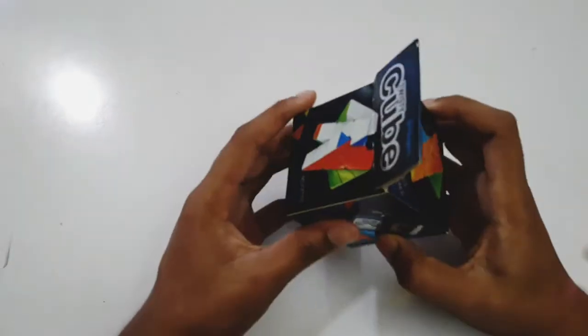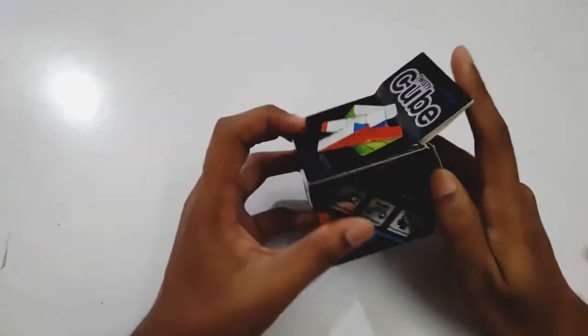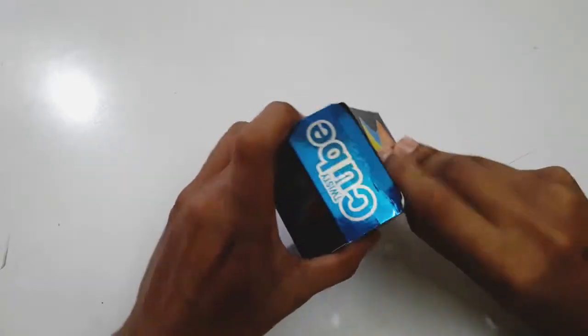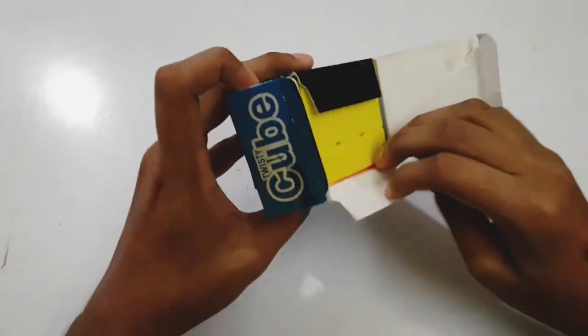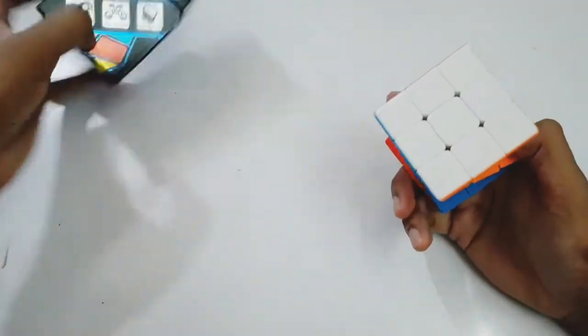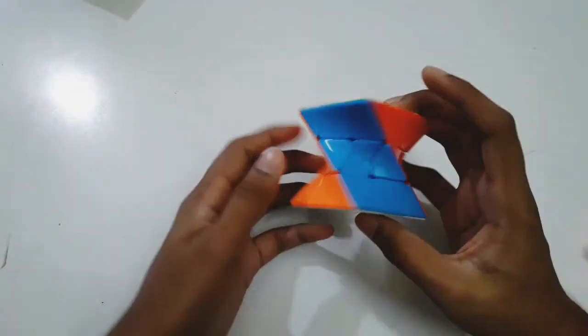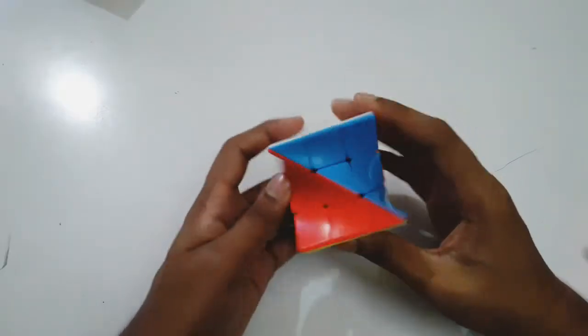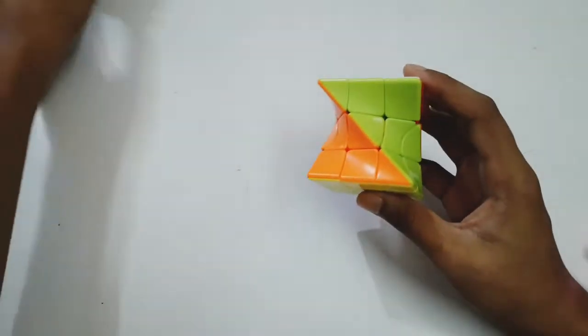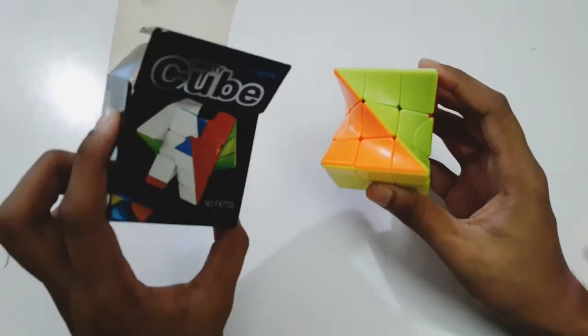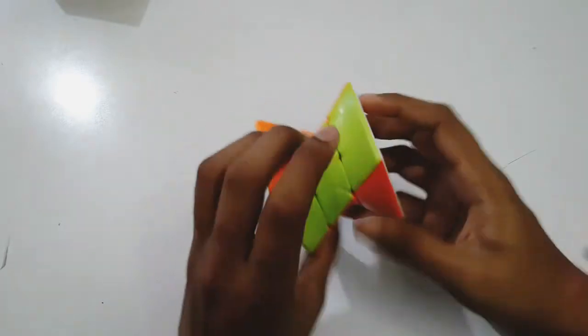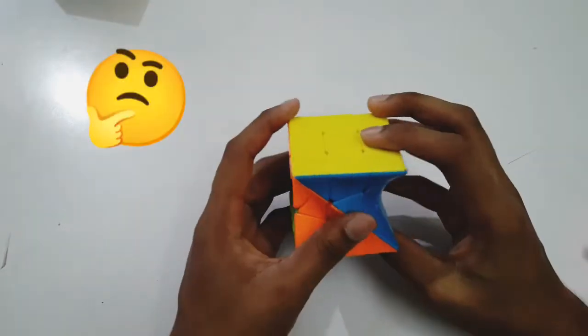So this is a Rubik's cube which was gifted to me. I got it yesterday, so I thought I would make a video about whether I can solve it. This is not a normal Rubik's cube - this is a twist Rubik's cube, a shape-shifting cube. I thought this would be similar to a three by three Rubik's cube.